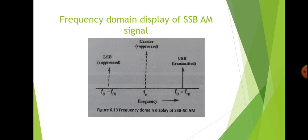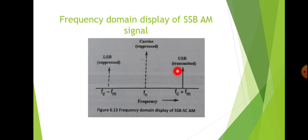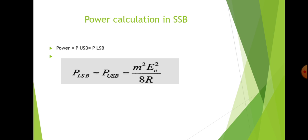We can represent the frequency spectrum of the SSB signal. In the case of AM, all three components — upper sideband, lower sideband, and carrier — will be present. But in the case of SSB, only one sideband will be present; the other is suppressed, shown as a dotted line. Only one sideband such as FC plus FM (the upper sideband) is transmitted. The power of the SSB is either the power of the upper sideband or the lower sideband, given by the equation M²Ec²/8R. Efficiency equals the power of the USB divided by the total transmitted power.